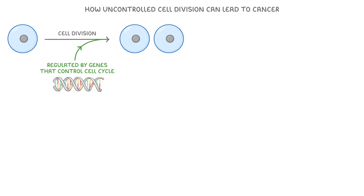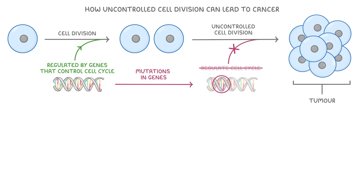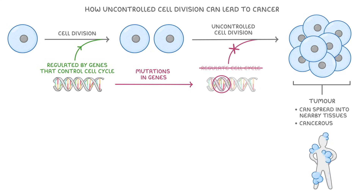Cell division is tightly regulated by genes that control the cell cycle, helping to ensure cells only divide when necessary. If there are mutations in these genes, they can no longer regulate the cell cycle as needed, leading to uncontrolled cell division. This can result in the formation of a mass of abnormal cells called a tumor. Sometimes these tumors stay in one place and don't cause too much harm, but other times they can spread into nearby tissues — when tumors become invasive like this, we describe them as cancerous, and they can spread throughout the whole body.